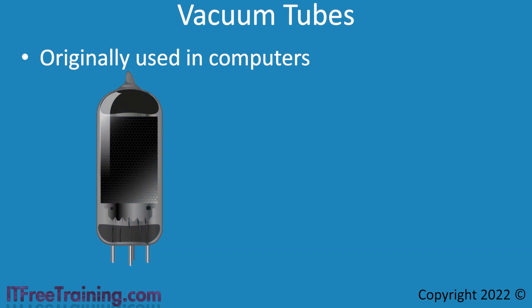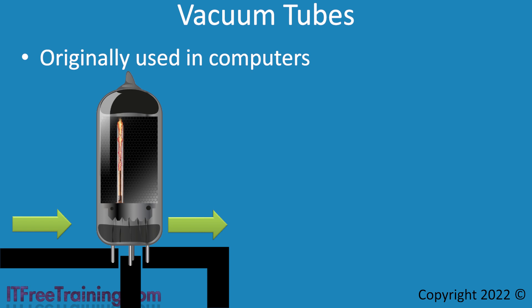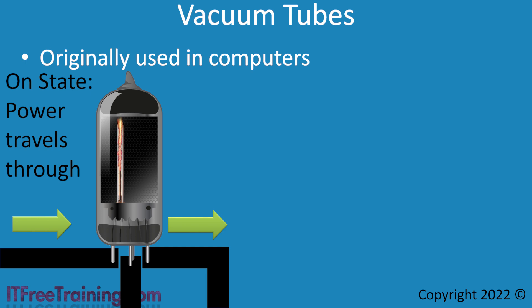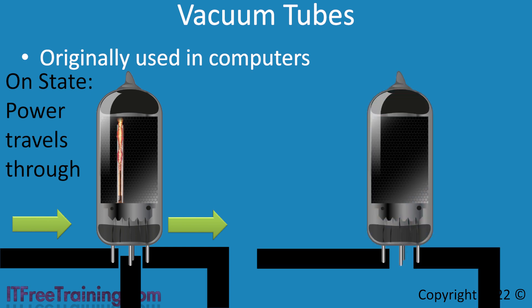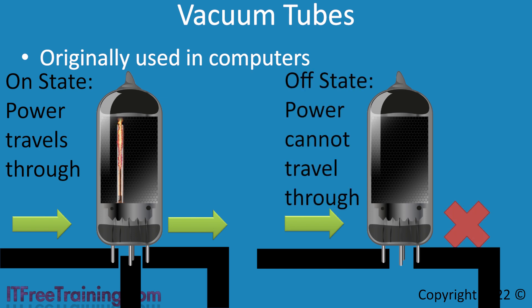One of the first methods of storing data in a computer was with the use of vacuum tubes back in the 1940s. A vacuum tube is essentially a glass tube with no air inside, just like a light globe. The glass tube contains a filament. If the filament is connected to a power source, the filament heats up. If power is applied to the left and the filament is active, power will be allowed to flow through to the right — this means the vacuum tube is in the on state. If the filament is not on, power will not be allowed through; this is called the off state. What the vacuum tube allowed was for a basic switch to be created, which could be in the on or off state, or to think of it another way, it could be 1 or 0.